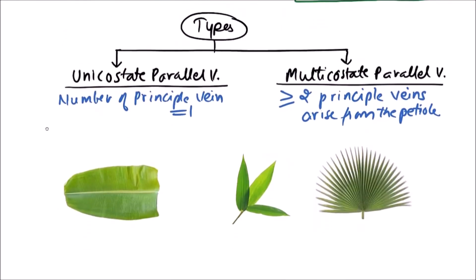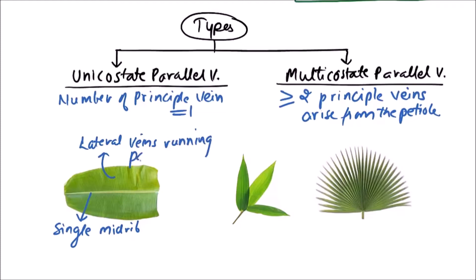In unicostate parallel venation, single midrib is there. We can observe that this is the single midrib or principal vein and these are the lateral veins running parallel to each other.